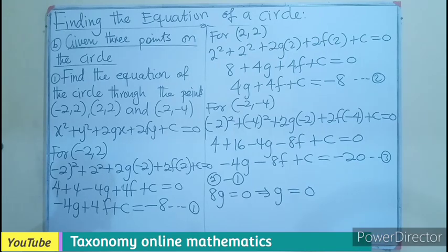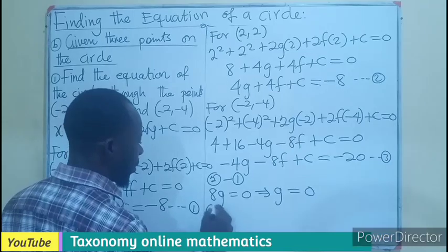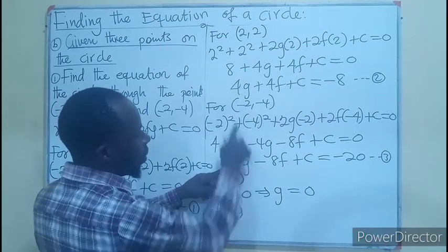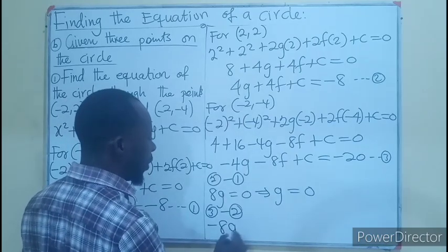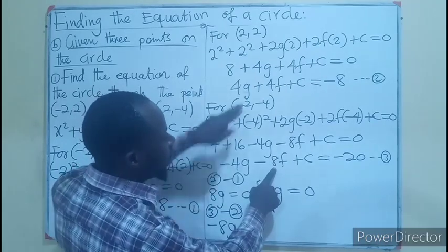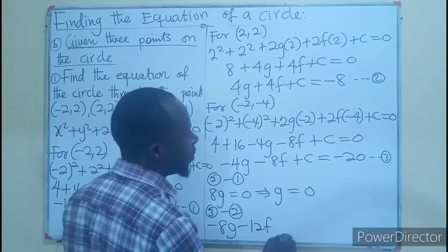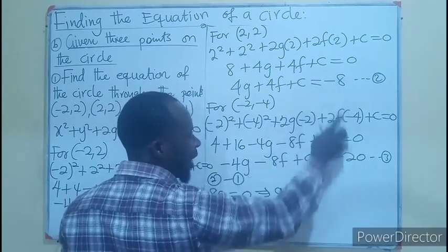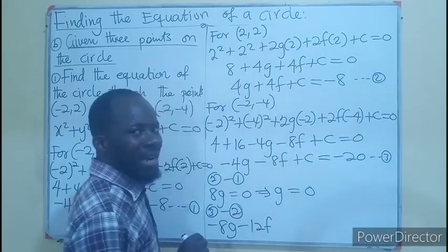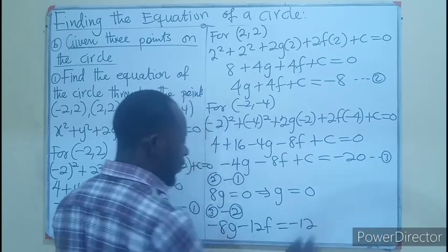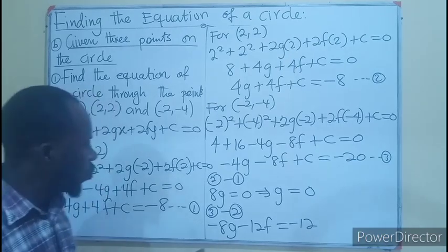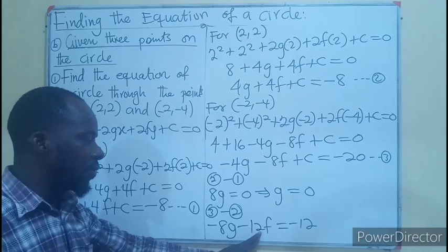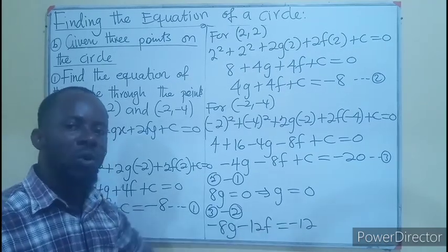Now let's compare Equation 3 minus Equation 2. Minus 4g minus 4g gives minus 8g; minus 8f minus 4f gives minus 12f; c minus c is zero; and minus 20 minus (-8) gives minus 12. So we have minus 8g minus 12f equals minus 12. Since g equals zero, that term becomes zero, leaving minus 12f equals minus 12.